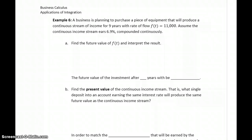In example six, we have a business planning to purchase a piece of equipment that will produce a continuous income stream for nine years. So that means this is our value for capital T, with a rate of flow f of t equals $11,000, and we're given the interest rate for our investment.